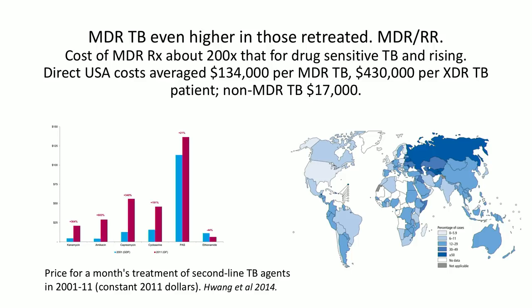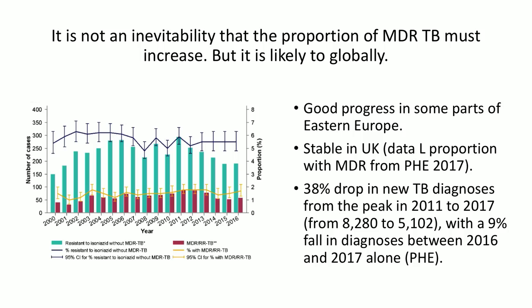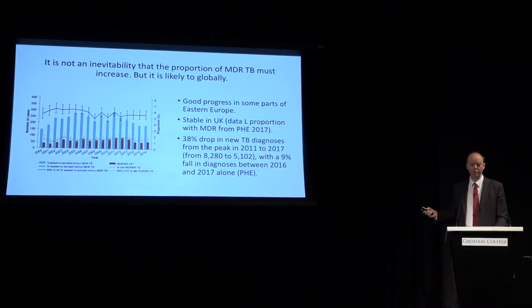Drug costs for second-line TB medications have actually been going up — from 2001 to 2011 prices increased rather than falling, which says something important about the market. Multi-drug resistant TB is likely to increase globally, though there has been good progress in parts of Eastern Europe. In the UK, the proportion of drug-resistant TB is stable and not increasing, and TB overall is decreasing rapidly — a 38% drop in new diagnoses from 2011 to 2017. But diagnosis remains difficult and drug resistance is spreading globally.